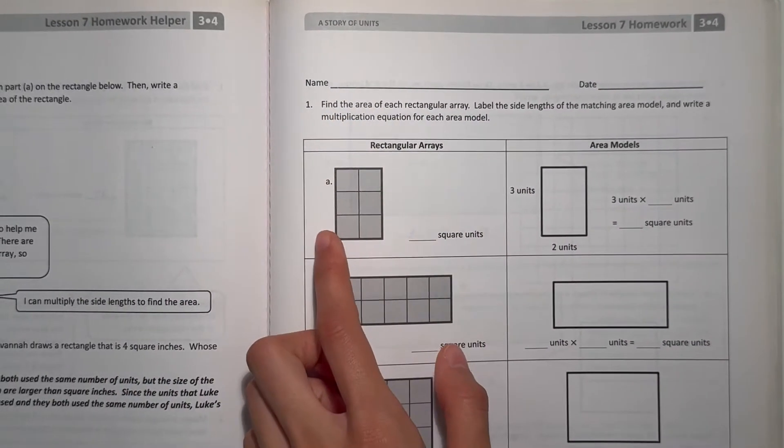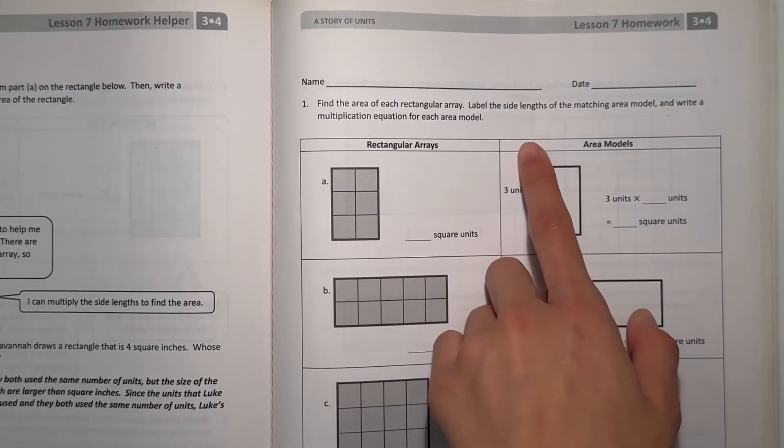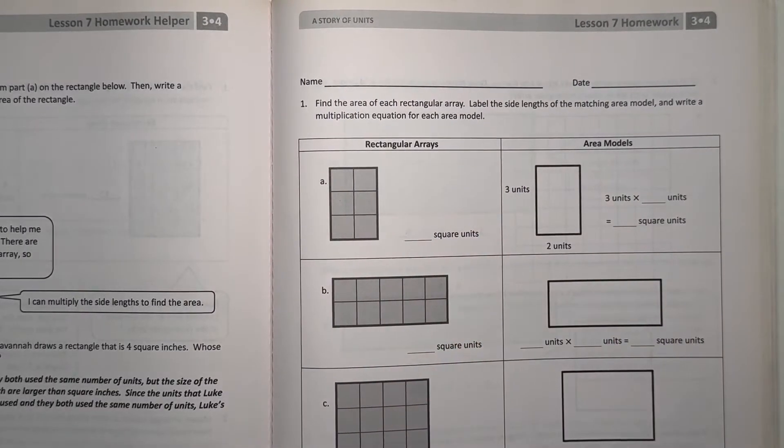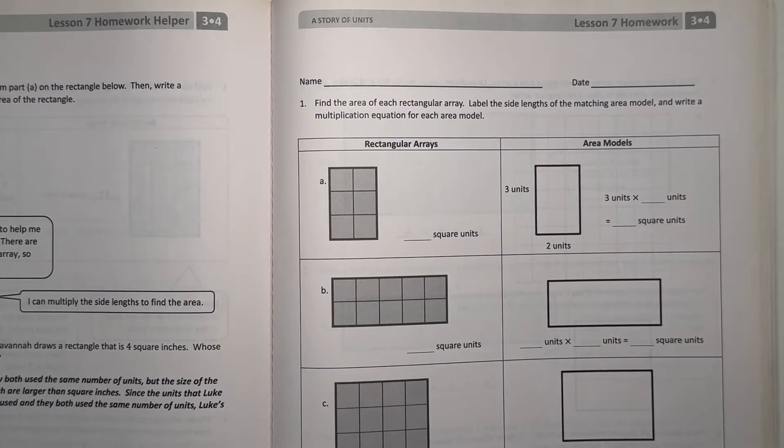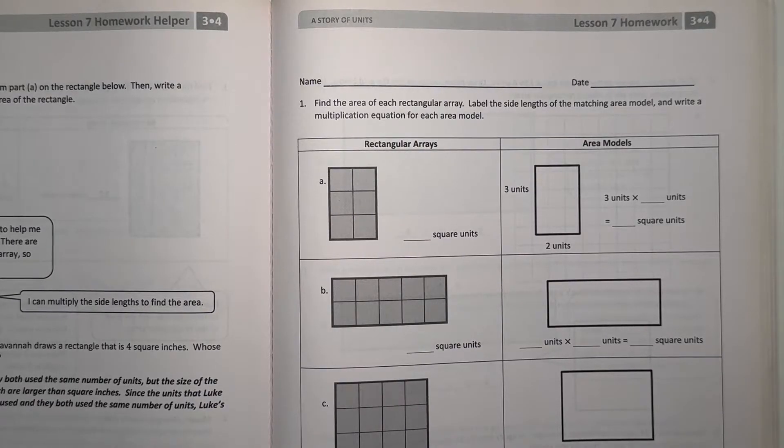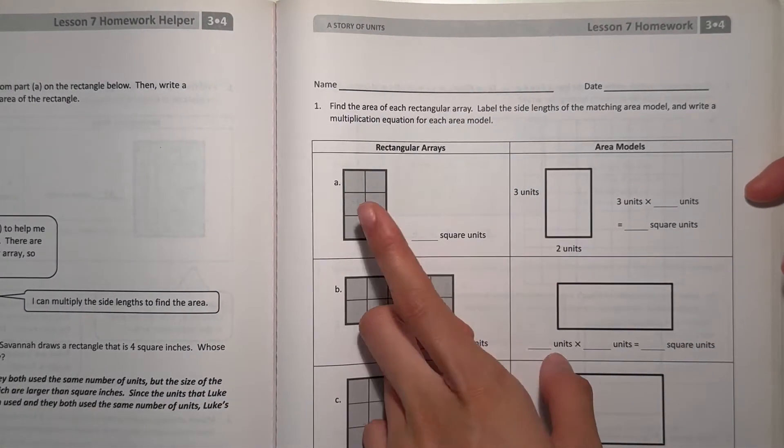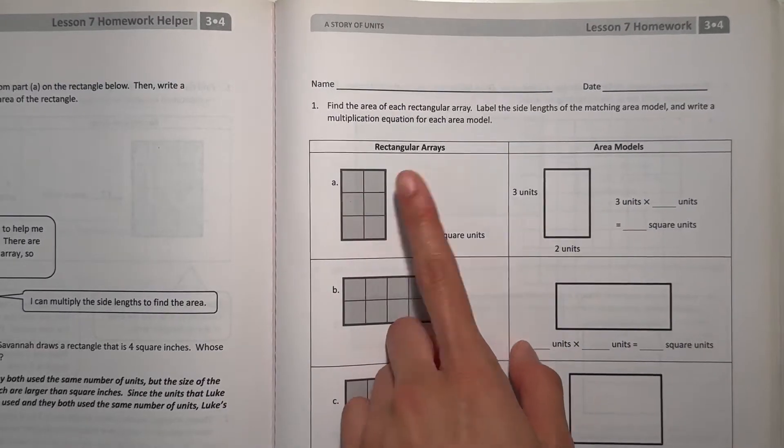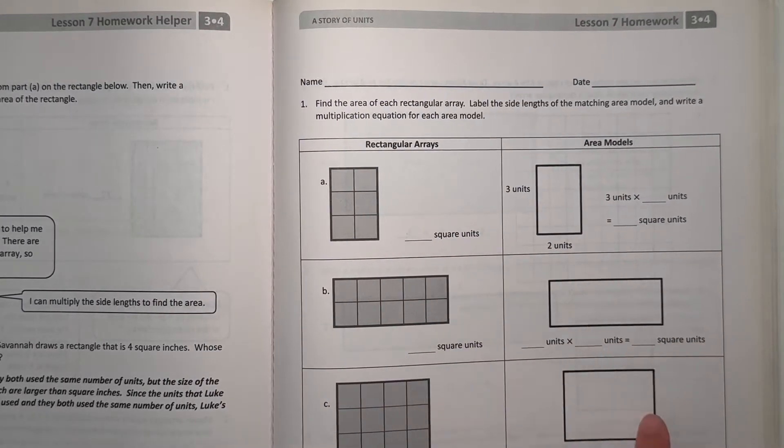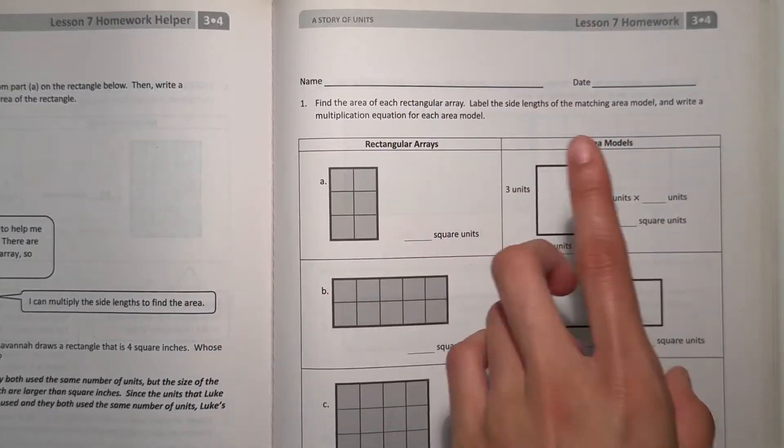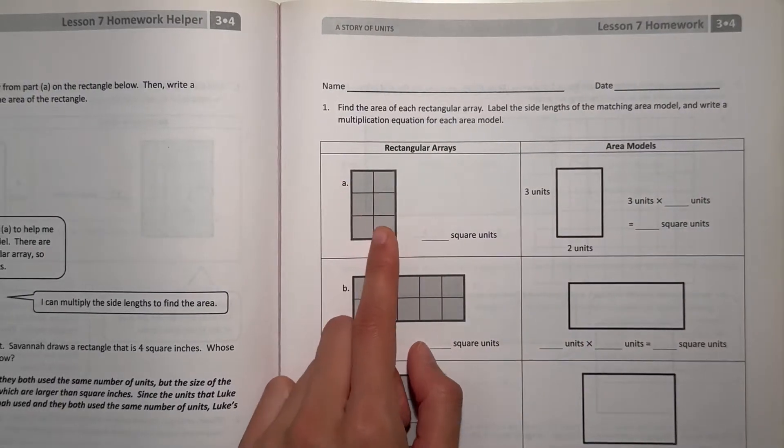Number 1, find the area of each rectangular array. Label the sidelines of the matching area model and write a multiplication sentence for each area model. Like I always say, one of the most important things when doing a math problem is understanding what we're doing. So here we have rectangular arrays. This one matches with this one.